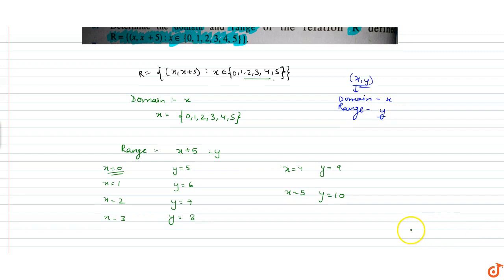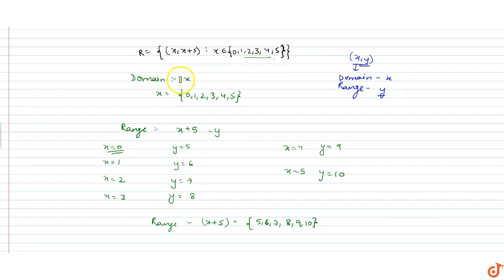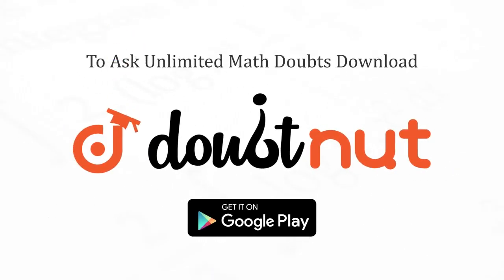तो correspondingly domain के हर element के लिए हमारे पास range का हर element आ गया. तो जो हमारा range है, range x plus 5. इसके values कितनी होगी? 5, 6, 7, 8, 9, 10. तो हमारा domain x का set है 0 to 5, and range x plus 5 का set है 5 to 10. So this is our answer.